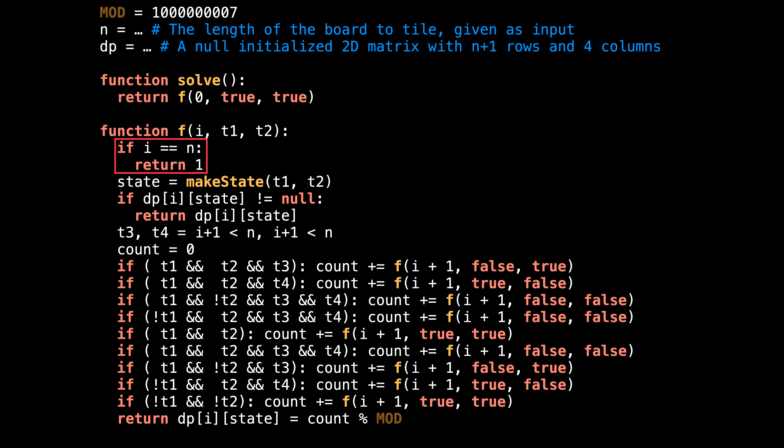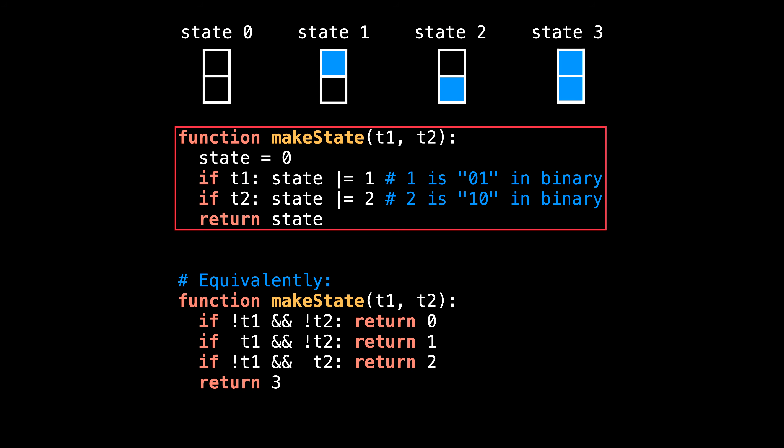Now stepping inside f, our base case is when we finish tiling the board, which we have done once i equals n, which means we have reached the end of the board. The next thing I do is encode the column slice into a state number based on which tiles are blocked. The makeState function is actually very simple. It returns the number associated with which column state is currently tiled. If t1 is tiled, we set the first bit to one. And if t2 is tiled, we set the second bit to one. The result is that we have a number between zero and three inclusive, which represents the unique column state represented by t1 and t2.